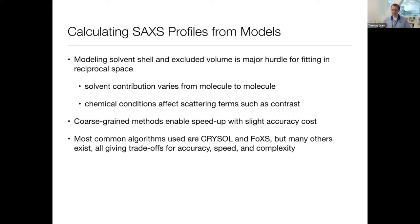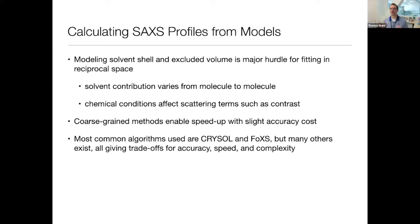One of the big things that has to be taken into account when calculating scattering profiles is the solvent — it is a very non-trivial contribution. There are primarily two different parts of the scattering profile contributed by the solvent, which we'll discuss on the next slide. The solvent is not simple to model — you can't just say all particles have the same solvent scattering. Every particle will have a different solvent contribution because it varies from protein to protein.